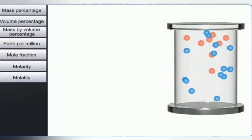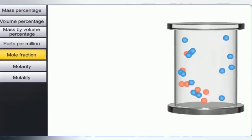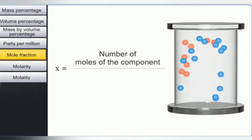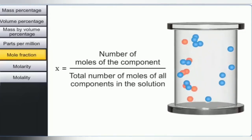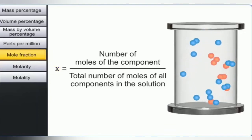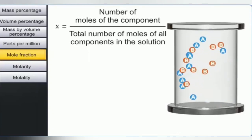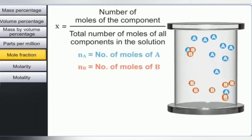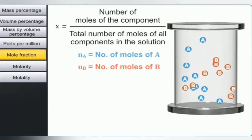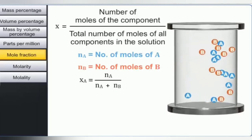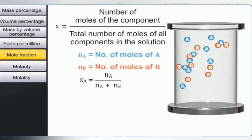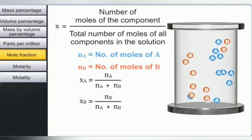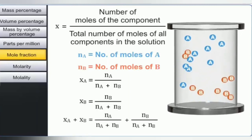Let us now discuss another commonly used concentration term: the mole fraction. The mole fraction of a component in solution is defined as the ratio of the number of moles of that component to the total number of moles of all components in the solution. It is represented by small x, and is very useful for representing concentrations in gaseous mixtures. In a binary mixture, if the number of moles of A and B are nA and nB respectively, then the mole fraction of A, that is xA, equals nA divided by (nA plus nB). The sum of the mole fractions of components A and B equals 1.